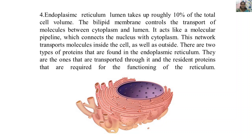There are two types of proteins found in the endoplasmic reticulum: those that are transported through it, and resident proteins — those synthesized and required for the function of the reticulum itself.